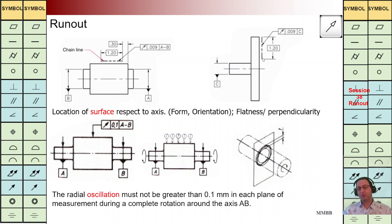We are going to control — let's say flatness and perpendicularity — for each cross section individually, for this flat surface, just for this part of that, not for the whole part of this flat surface.